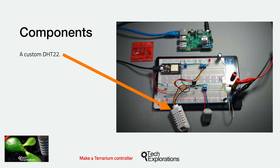You'll need a regular DHT22 sensor in a special package with extended wires for the power and data pins, like the ones you see in this photo. The special packaging makes it easy to place the sensor inside the terrarium container. You can actually use a regular DHT22 and solder long flexible jumper wires to its pins so that you can place it inside your terrarium container, instead of purchasing the modified version.